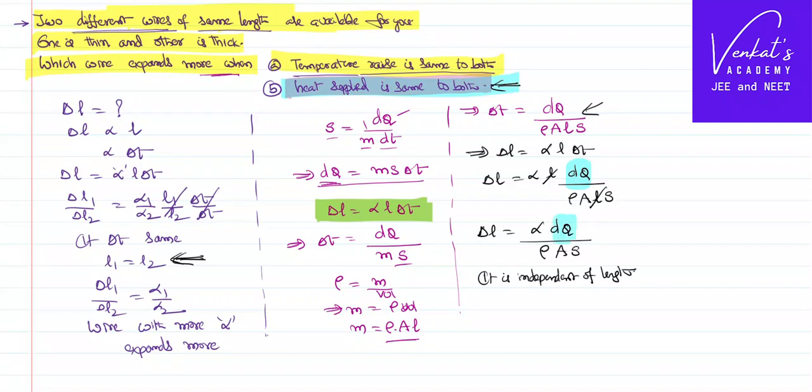Therefore dQ is same, that is not a variable, right. I can write, therefore, the value of that ΔL₁/ΔL₂ as α₁/α₂.